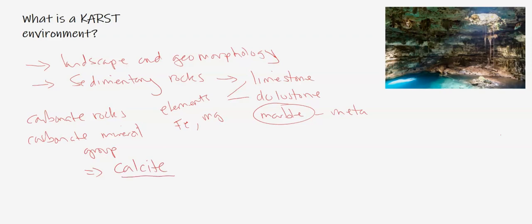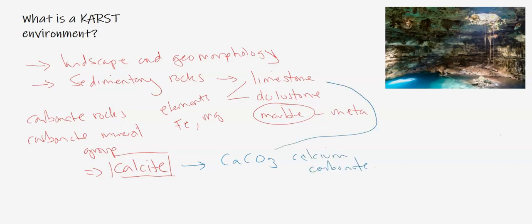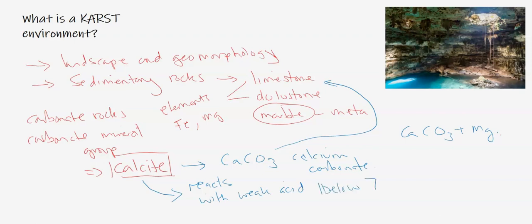Calcite is the most common mineral within limestone and dolostone. The elements in calcite are CaCO₃ — calcium carbonate — which is the same chemical formula as limestone, with dolostone being the addition of some magnesium. Calcite is very reactive in that it reacts with weak acid — anything below seven on the pH scale. A weak acid in particular which is naturally occurring would be carbonic acid.